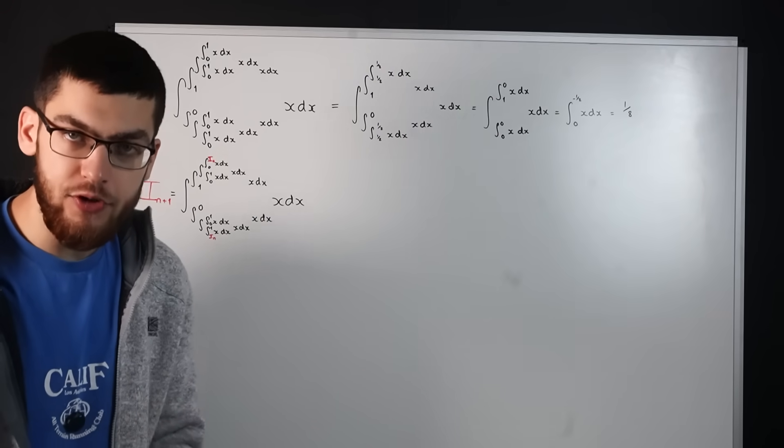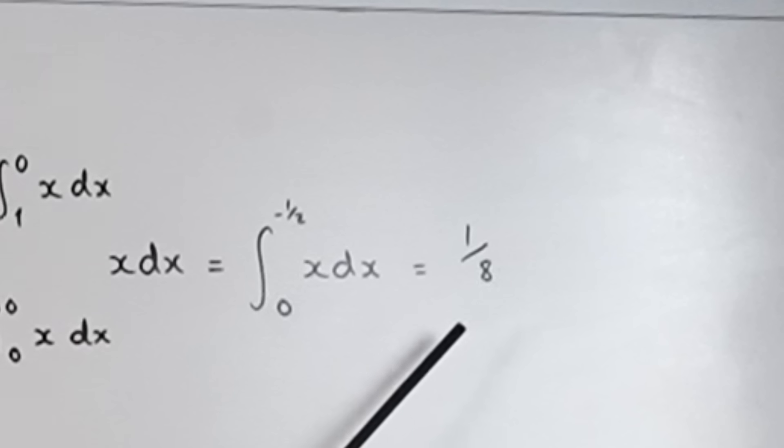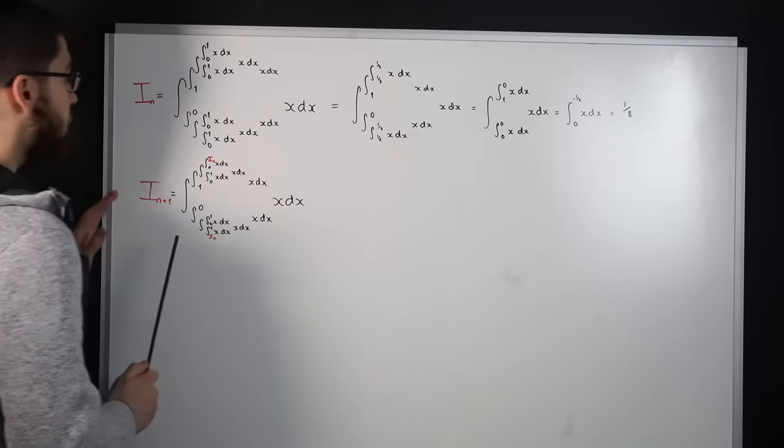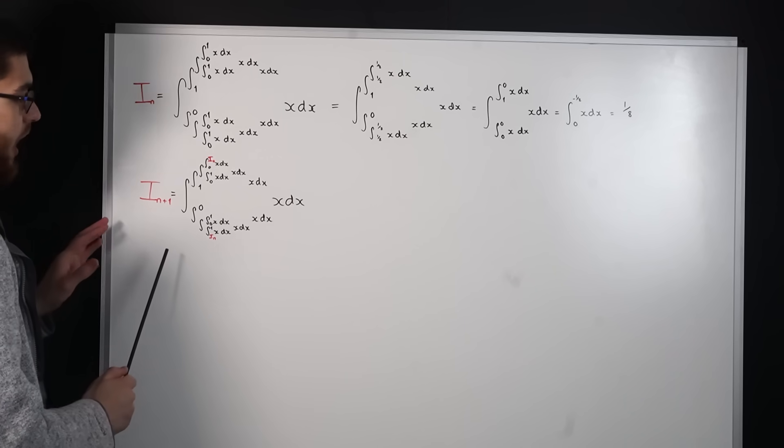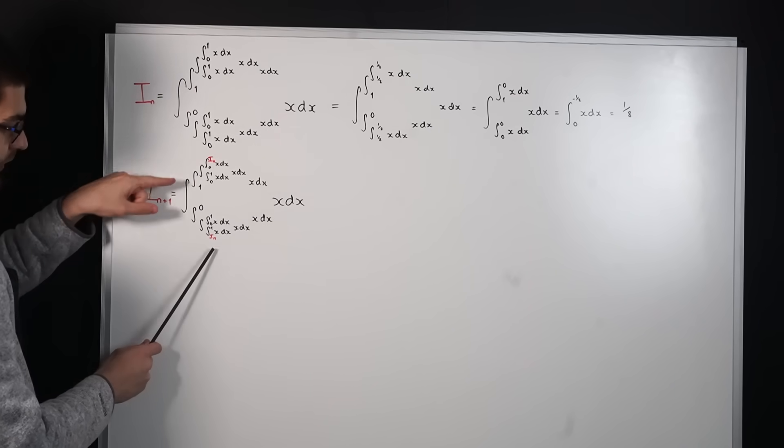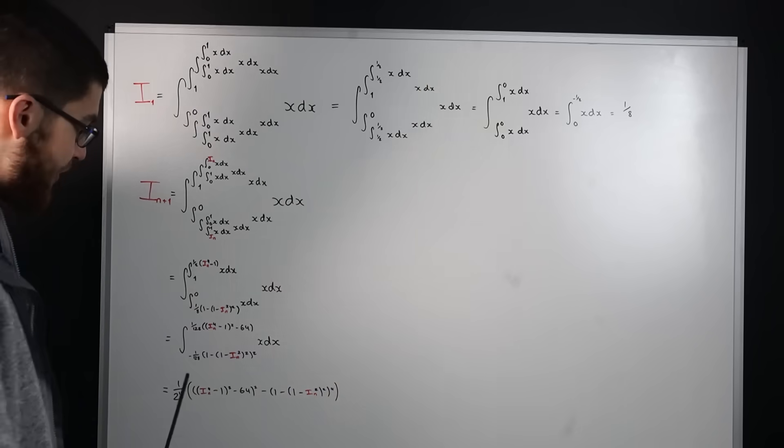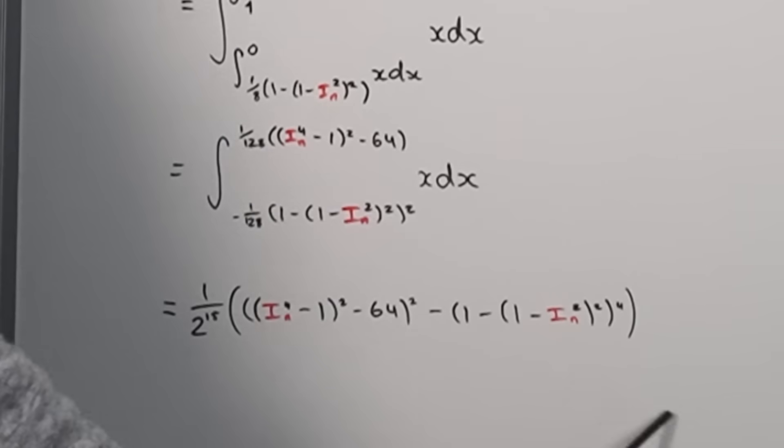So now we've got a recurring integral. We've got an initial condition here which I won't bore you with the details, it turns out to be one eighth, and we've got a recurring formula here where to find the next term in the sequence we do the same pattern as before only replacing this one and this one with the previous term. Now if we evaluate the recurring integral we can then just apply it to the one eighth to get the next term.